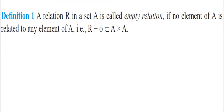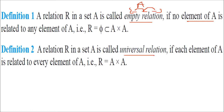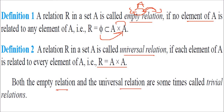A relation R in a set A is called an empty relation if no element of A is related to any element of A. A relation R is said to be a universal relation if each element of A is related to every element of A, meaning R equals A cross A. Note that the empty set is a subset of A cross A. Both the empty relationship and universal relationship are known as trivial relations.